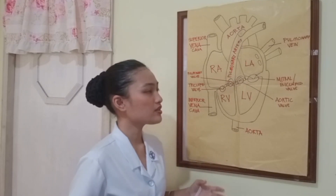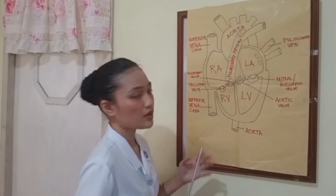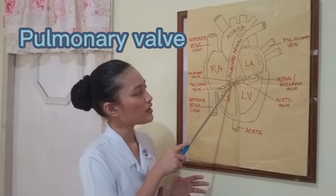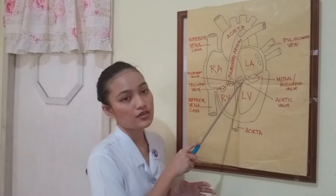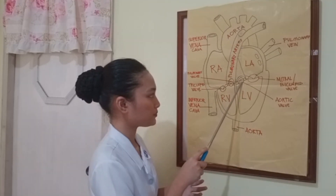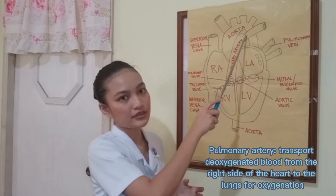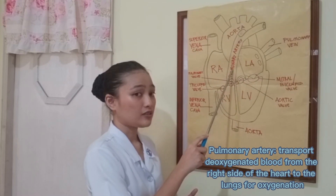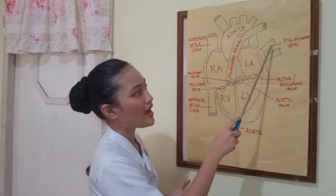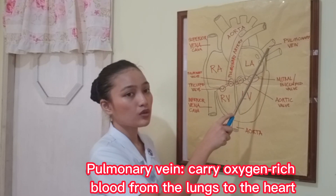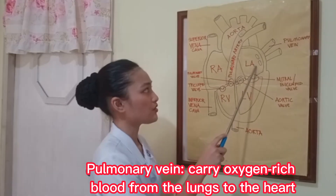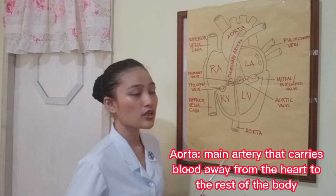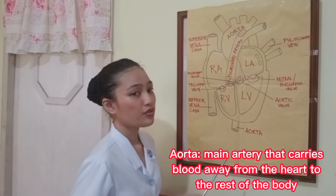The remaining two valves are called the semilunar valves, mainly because of their crescent-shaped form. The first semilunar valve located here is called the pulmonary valve, and the other one located here is called the aortic valve. This is the pulmonary artery, responsible for delivering deoxygenated blood into the lungs. The pulmonary vein is responsible for carrying oxygen-rich blood back into the heart. And lastly, the aorta is an artery responsible for distributing oxygenated blood throughout our body.